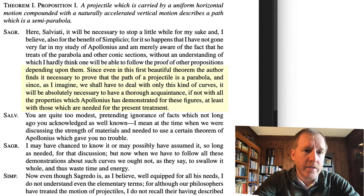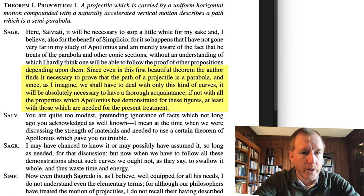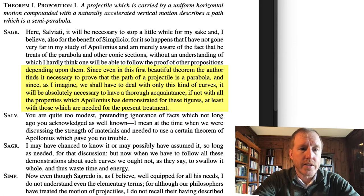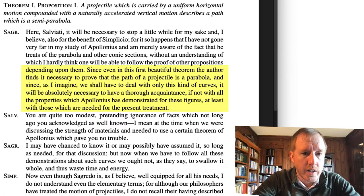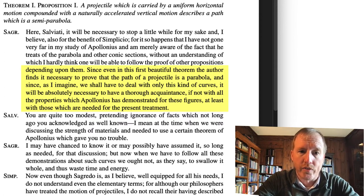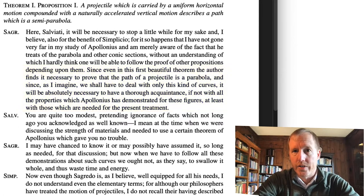He goes on to say: Since even in this first beautiful theorem, the one that Galileo just put forward, the author finds it necessary to prove that the path of a projectile is a parabola. And since, as I imagine, we shall have to deal with only this kind of curves, it will be absolutely necessary to have a thorough acquaintance, if not with all the properties which Apollonius has demonstrated for these figures, at least with those which are needed for the present treatment. So we're going to have to remind ourselves what these conic sections are.